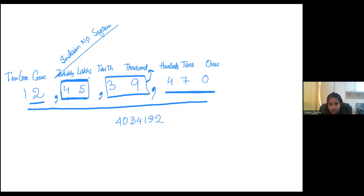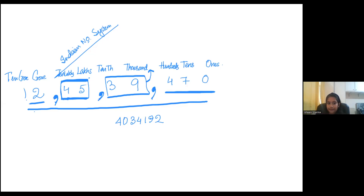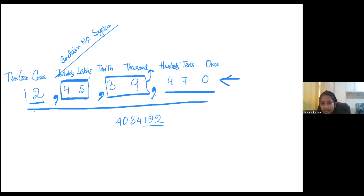In Indian number system, we put the comma after the thousands place — first three digits from the back, then every two digits. Now can you spell the whole number? Just consider the first two numbers — you have to do it that way. What is the place value of each digit? Two is in one's place, nine is in tens, one is in hundreds, next is thousands, then ten thousands, then lakhs, then ten lakhs.